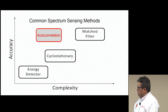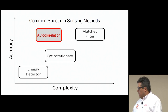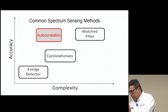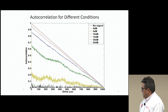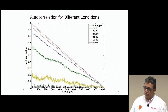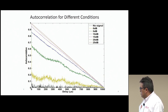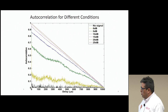I picked the autocorrelation because that method doesn't need to know the noise level of the environment, whereas the energy detector needs to know that in order to distinguish between a primary user or absence of primary user. The autocorrelation of noise is very different from the autocorrelation of signals. As we can see in this graph, this black curve is the autocorrelation when we have only noise, and as the signal-to-noise ratio increases, the autocorrelation approaches this reference line, which is the limit that it can reach.